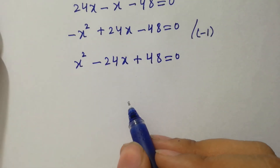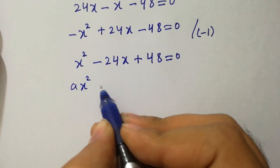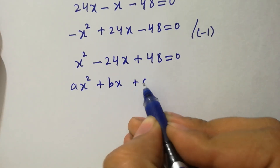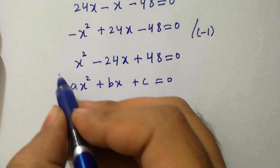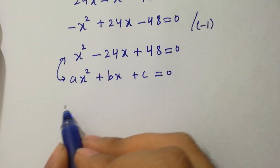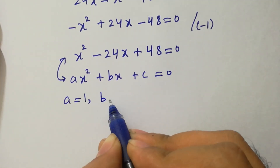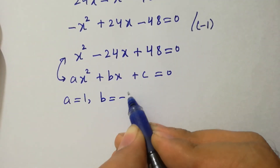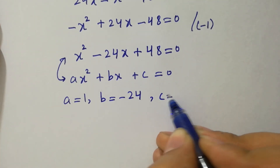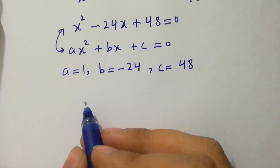This gives x squared minus 24x plus 48 equals 0, which is a quadratic equation of the form ax squared plus bx plus c equals 0. By comparing, a equals 1, b equals minus 24, and c equals 48.